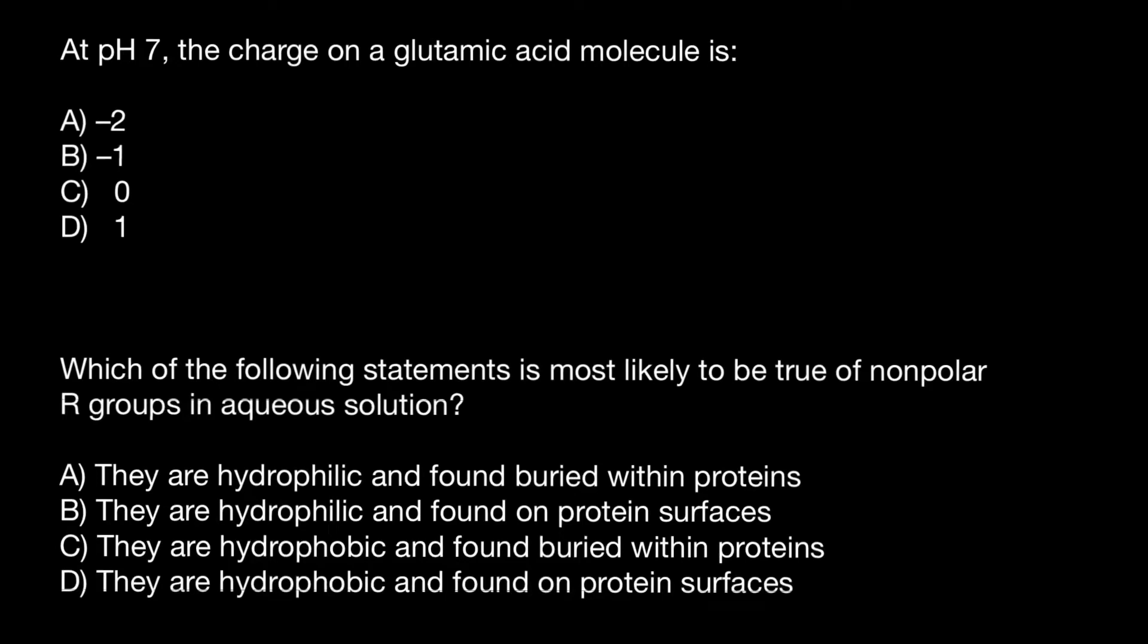Hello, and welcome to Nikolai's genetics lessons. The first question is: at pH 7, the charge on a glutamic acid molecule is, and you have to choose one of these answers.